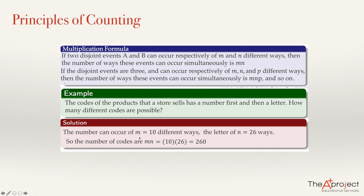And if we have a code that has two numbers and one letter, then we multiply ten times ten times 26, and so on.